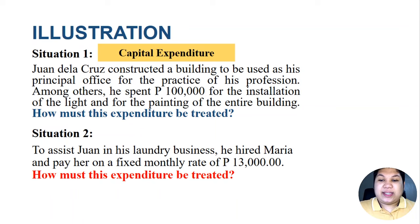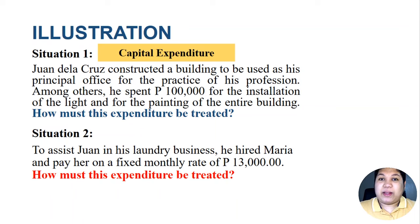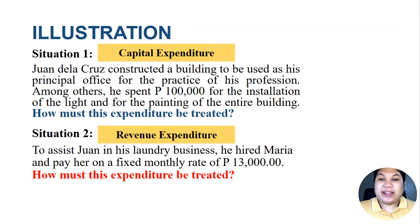In situation two, to assist Juan in his laundry business, he hired Maria and pays her a fixed monthly rate of 13,000 pesos. Since Maria is an employee and this 13,000 pesos is a regular monthly salary, this is a revenue expenditure — it benefits only one month and is recurring, hence classified as a revenue expenditure.